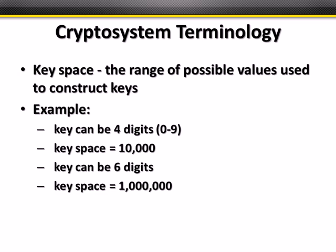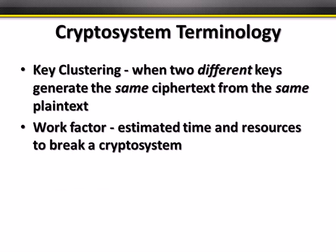Key space is the range of possible keys. For example, an ATM PIN with four digits has ten possible digits in each position, giving 10,000 possible keys. With six digits, that expands to a million. Key clustering is when two different keys generate the same ciphertext from the same plain text — we don't want this, because it means someone else's key could decrypt your information.